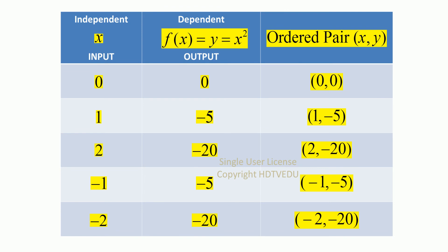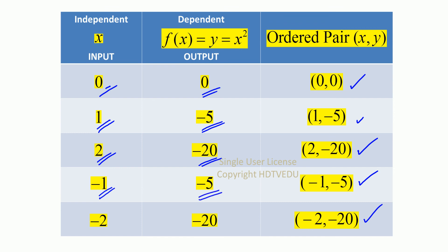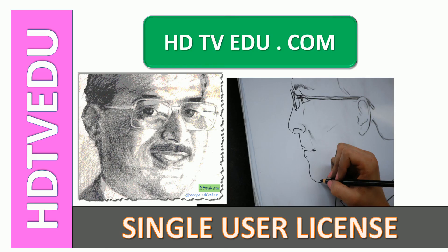When we put all these together: (0, 0), (1, negative 5), (2, negative 20), (negative 1, negative 5), and (negative 2, negative 20). The inputs — 0, 1, 2, negative 1, negative 2 — are all members of the domain. The range is 0, negative 5, negative 20. We have the ordered pairs, so now you can plot the graph. This is George Matthew signing off — good luck!